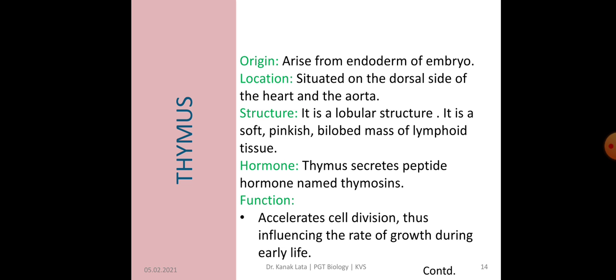The next endocrine gland is Thymus gland, which originates from endodermal tissue of the embryo. Thymus is located on the dorsal side of the heart and aorta. Thymus is a lobular structure and is a soft, pinkish, bilobed mass of lymphoid tissue. The hormone secreted by thymus is thymosins.